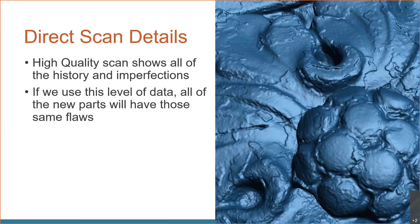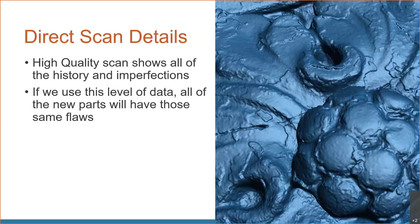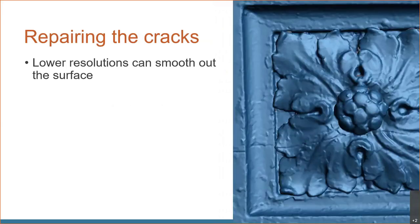There are a couple of things we can do to start cleaning up the scan data. One option is to bring it in at a slightly lower resolution, which already has a nice smoothing effect. As you can see, it's dramatically less detailed — we don't see the little flecks of paint coming off or the thick plaster coatings — but there's still a big crack going through the bottom right that we'll want to clean up.